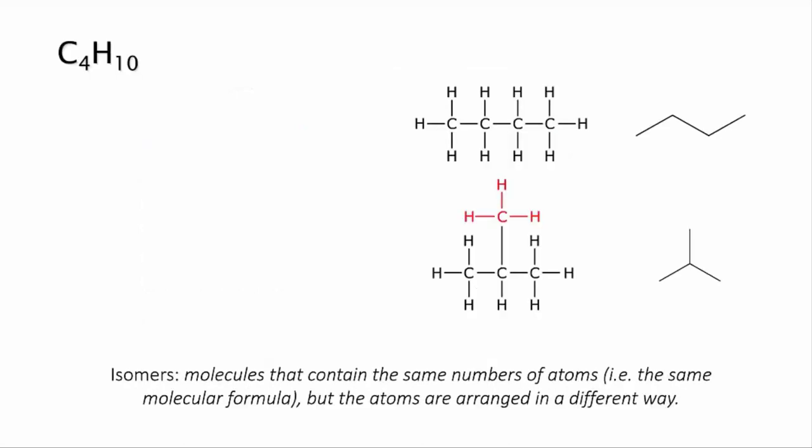Let's start by looking at the isomers that have the formula C4H10. I've put them here both in a full structural formula and a stick structure. The first molecule, the linear one, is easy. It's a straight chain with four carbons and it's an alkane, so it's called butane.